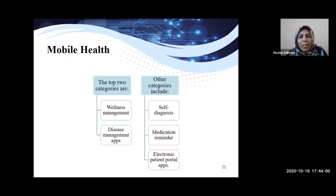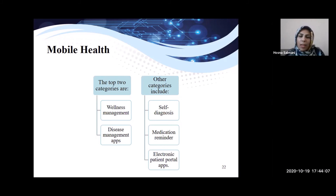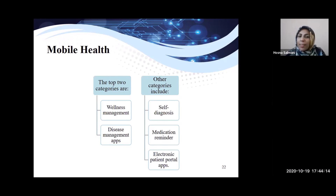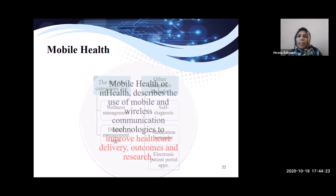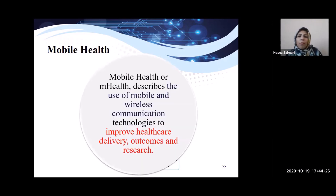There are two top categories of mobile health: wellness management and disease management apps. Other categories include self-diagnosis, medication reminder, and electronic patient portal apps. Overall, mobile health describes the use of mobile and wireless communication technologies to improve healthcare delivery, outcomes, and research.